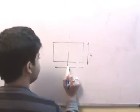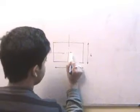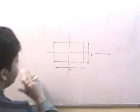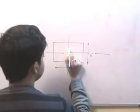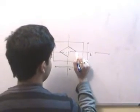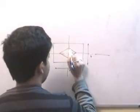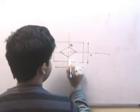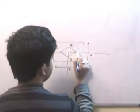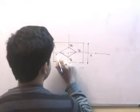Then effectively, there will be compressive stresses acting throughout this cross section if I can place my load within this core. And the coordinate of this is defined as: this is B by 6, this is B by 6, this is H by 6, this is H by 6.